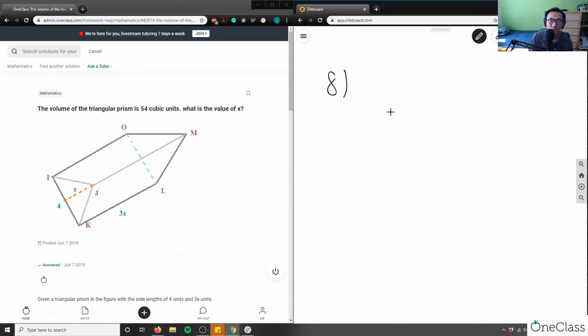So it says volume is 54, right? Volume of triangular prism. So I'm going to say volume here equals 54 cubic units.